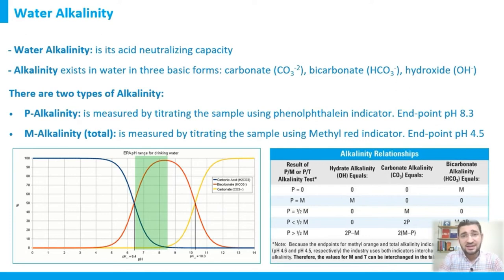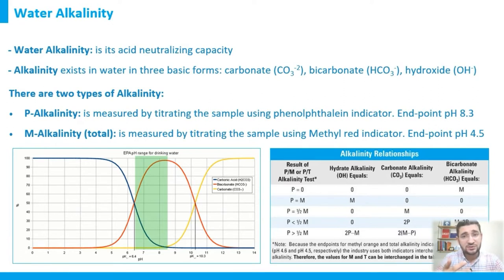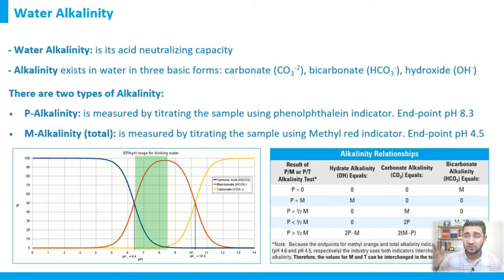What are the alkaline ions or species in water? There are mainly three types: carbonate (CO₃²⁻), bicarbonate (HCO₃⁻), and hydroxide ion (OH⁻). These three ions represent the alkalinity in water. The higher the concentration of hydroxide, carbonate, and bicarbonate, the higher the alkalinity level in that water.